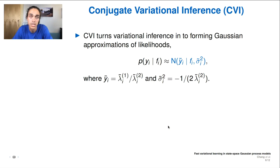So in the paper, we turn to something known as conjugate variational inference, or CVI, which was popularized by Emtias Khan and Wu Lin in a 2017 paper. The bit that we're concerned with is that instead of forming our variational posterior as an approximation in the posterior sense, we instead form an approximation of the likelihoods themselves.